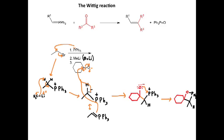What happens next is oxygen likes to make bonds to phosphorus. We break the carbon-oxygen bond and we break the phosphorus-carbon bond to separate the two molecules. That leads to our six-membered ring with a double bond to our carbon — which is connected to a carbon and a hydrogen — and the other product formed is our triphenylphosphine oxide. And that is the mechanism, with the alkene we've formed.